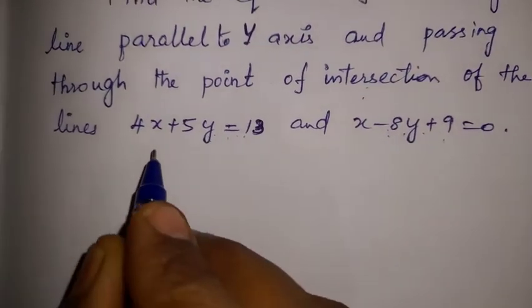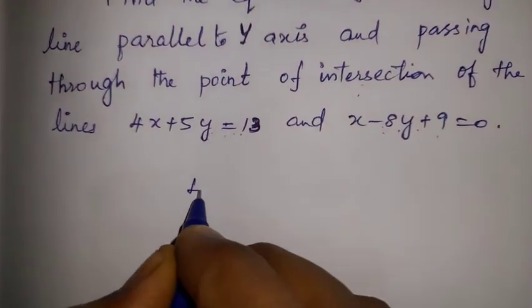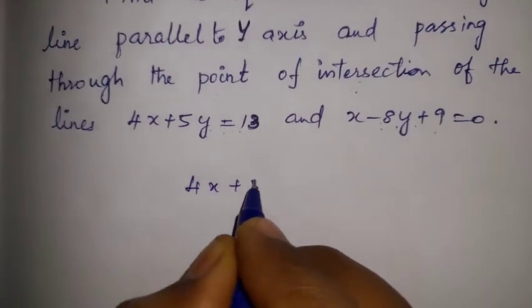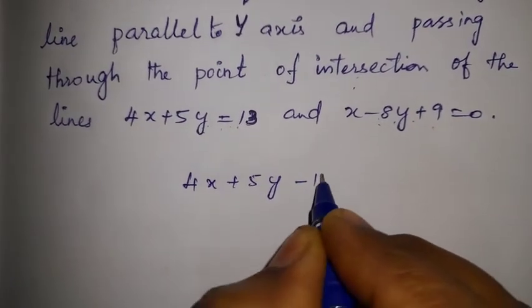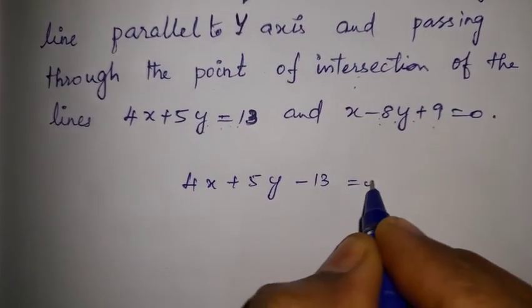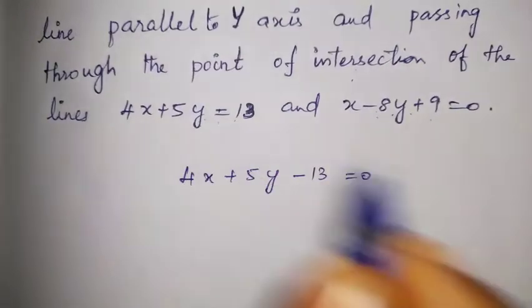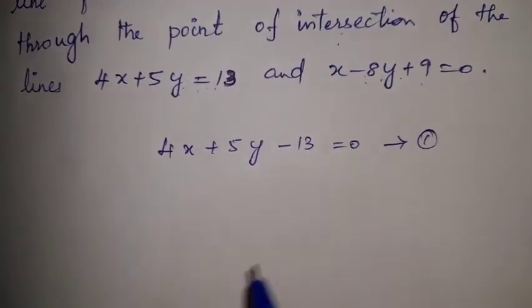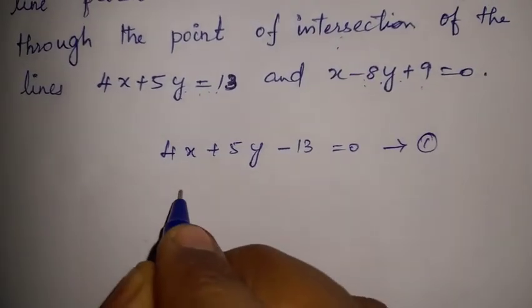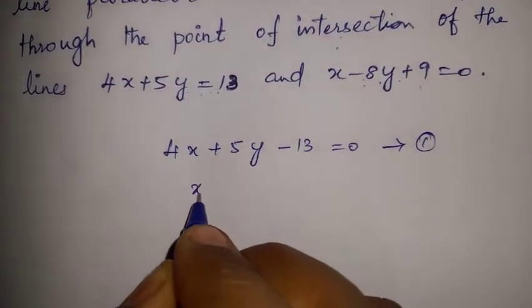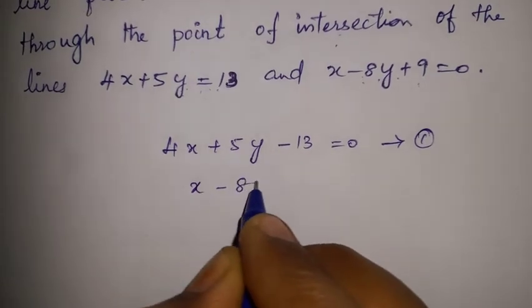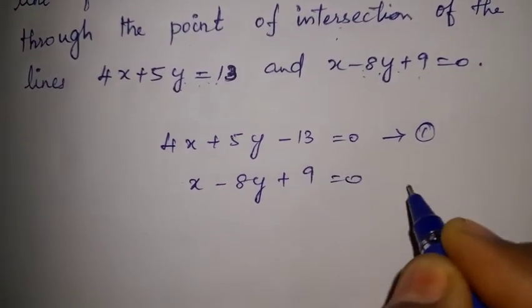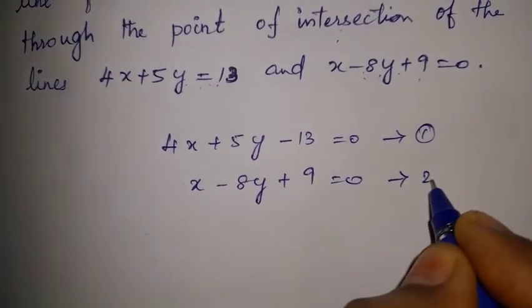Now we have to solve this equation. The first equation is: 4x plus 5y minus 13 equal to 0, with the constant moved to the left side. This is equation number one. The second line equation is: x minus 8y plus 9 equal to 0. This is equation number two.